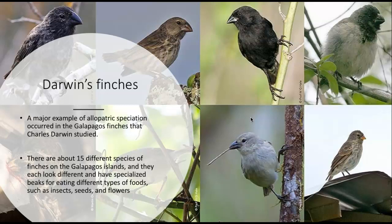A really good example of allopatric speciation is Darwin's finches, which occur in the Galapagos — a number of islands. These species get separated because they are on different islands. There are about 15 different species of finches on the Galapagos Islands, and they each look different. They've got specialized beaks for eating different types of foods like insects, seeds, flowers, and cactuses, and some even use tools. They are all different because they are on different islands — a clear example of allopatric speciation.